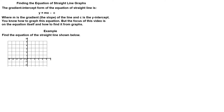Find the equation of the straight line shown below. We are looking for an equation of the form y = mx + c, which means we need to find the gradient M and the y-intercept C. Finding the y-intercept is easy. Looking at the graph, we can see it touches the y-axis at 2. So C equals 2.